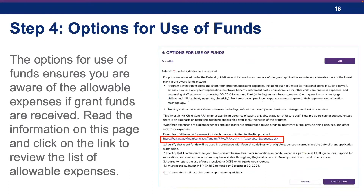Step four is options for use of funds, which ensures providers are aware of the allowable expenses if grant funds are received. Read the information on this page and click on the link to review the list of allowable expenses. Acknowledge that you agree and click the Save and Next button.